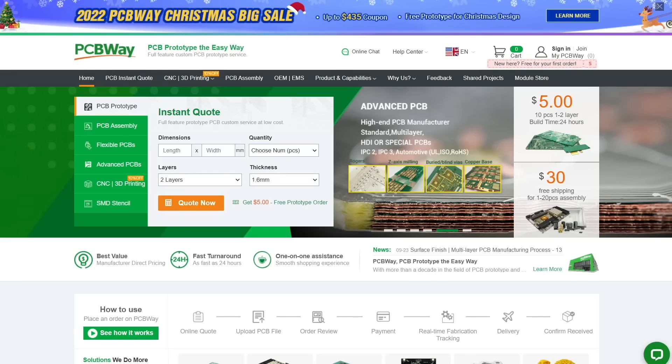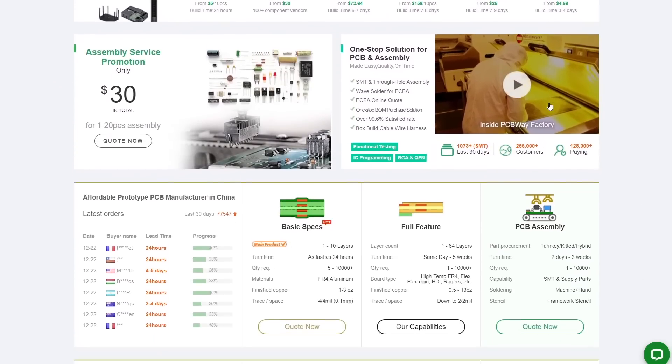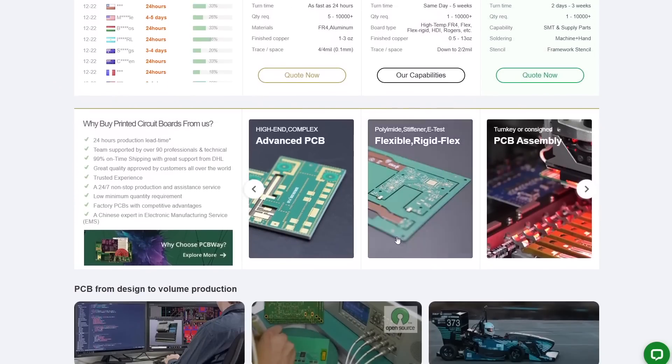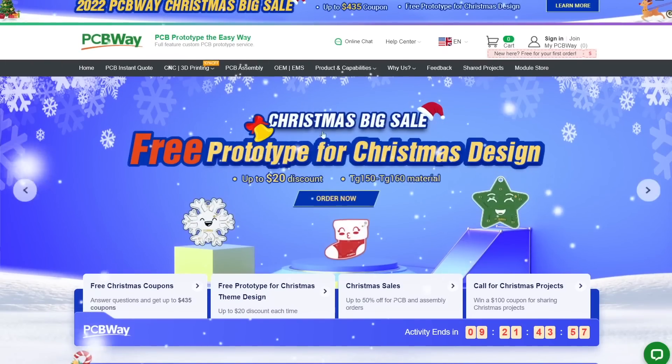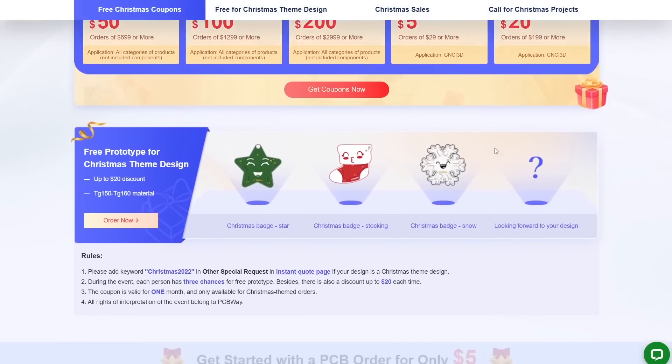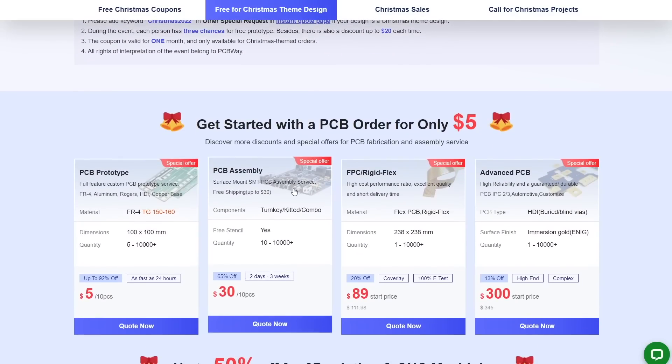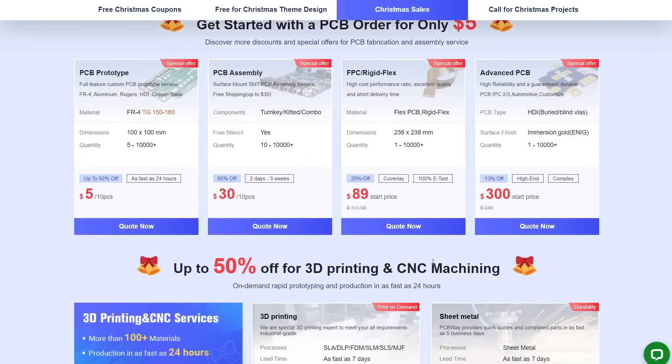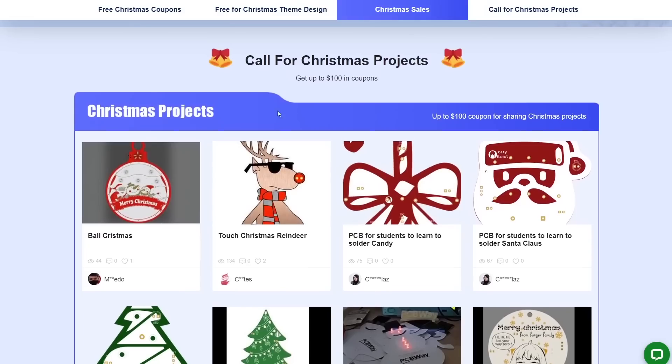PCBWay is your website to get your PCB prototypes the easy way, and especially now that they are running their 2022 PCBWay Christmas Big Sale. If you go to their promo page at PCBWay.com, clicking in the top banner on their website, or through the link in the description, you will find all kind of advantages such as free Christmas coupons, free prototype for Christmas theme design, huge Christmas sales up to 50% off for PCB and assembly orders, as well as up to 50% off for 3D printing and CNC machining, special sales in PCBWay store, and a call for Christmas projects where you can get up to 100 USD in coupons. So go and take this opportunity before it expires on the 31st of December.